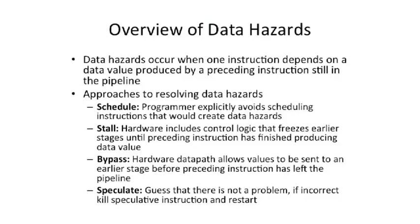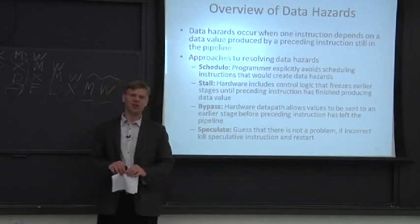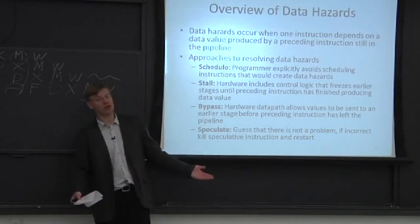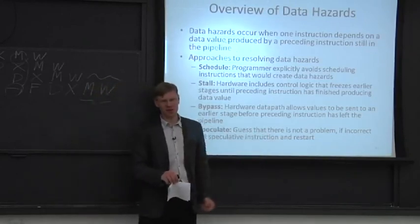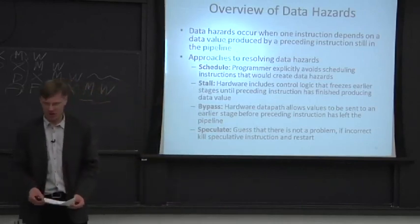Finally, there's speculation, which we'll talk about later. If you have a data hazard, you can assume it's not a problem, use the incorrect value for a short time assuming the old value equals the new value — this is data speculation. If you make a mistake, you catch it by the end and re-execute with the correct value. This is used in out-of-order processors in multiple ways.